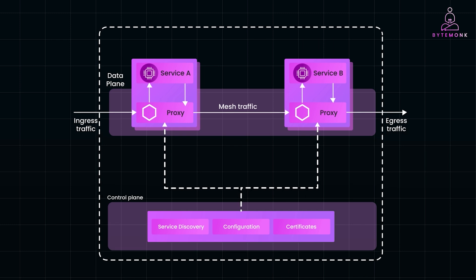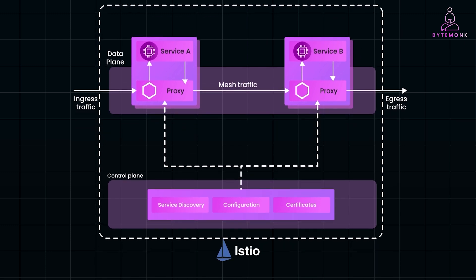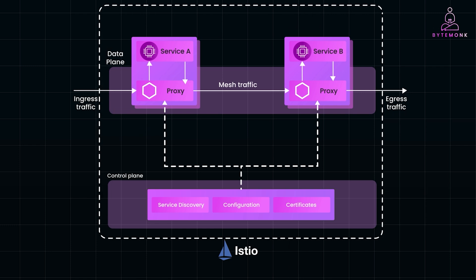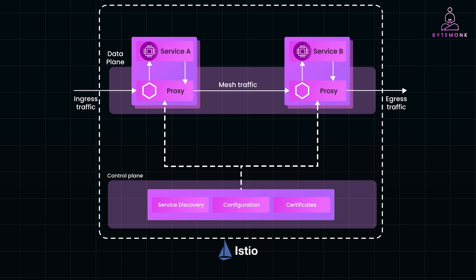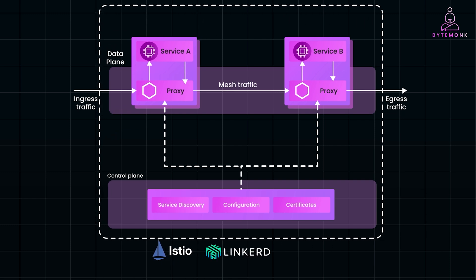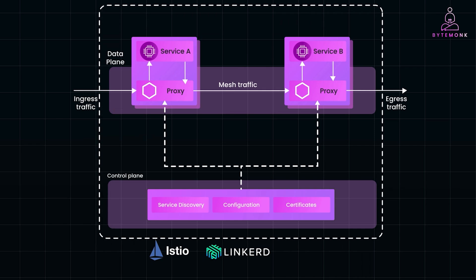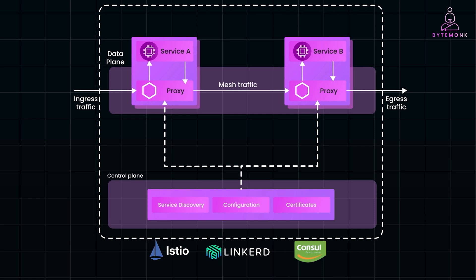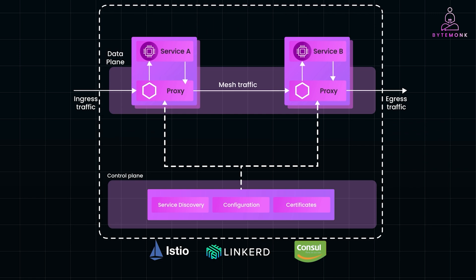There are several tools available to implement a service mesh in your microservices architecture. Istio is one of the most widely used, providing powerful traffic management, observability, and security features, and works with Kubernetes. Linkerd is another lightweight, performance-focused service mesh solution, often preferred for simpler use cases. Consul is another tool that provides service discovery, health checking, and network segmentation in addition to typical service mesh features.